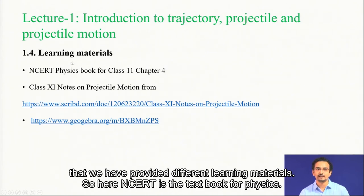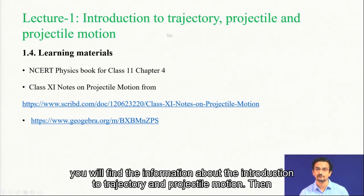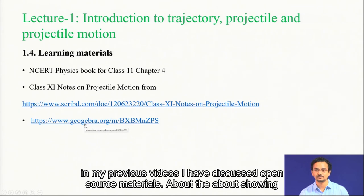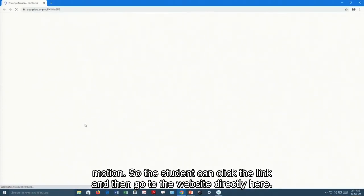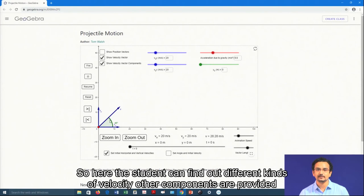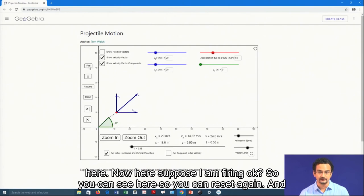We have also provided different learning materials. NCERT is the textbook for physics — we have mentioned that for Class 11, Chapter 4, you will find information about the introduction to trajectory and projectile. We have also provided some online notes. As I mentioned in my previous videos regarding open source materials, I have provided one link for the simulation of projectile motion so the student can click the link and go to the website directly, where different velocity components are provided.